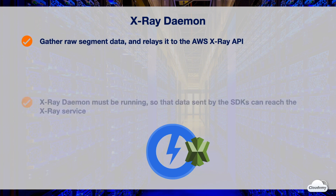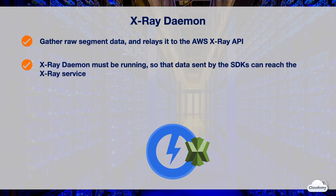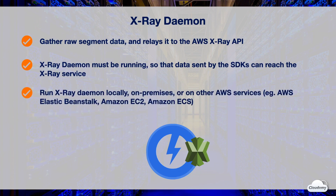The X-Ray daemon works in conjunction with the X-Ray SDKs. You must run the X-Ray daemon so that data sent by the SDKs can reach the X-Ray service. You can run the X-Ray daemon locally, on premises, or on other AWS services such as AWS Elastic Beanstalk, Amazon EC2, and Amazon ECS.